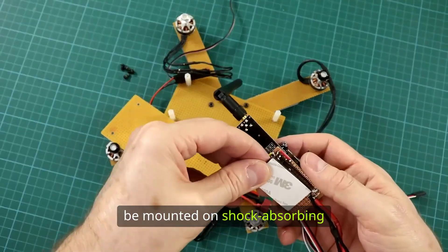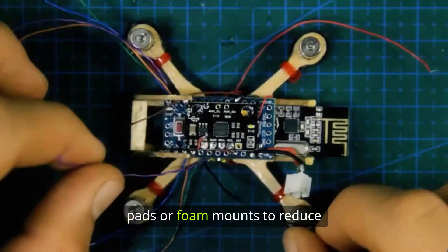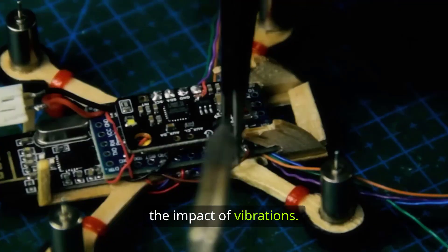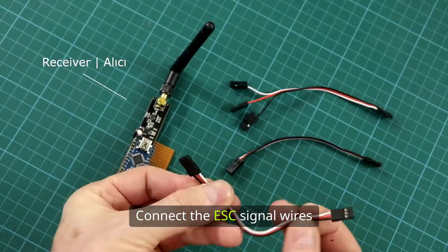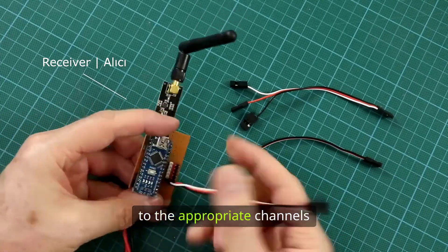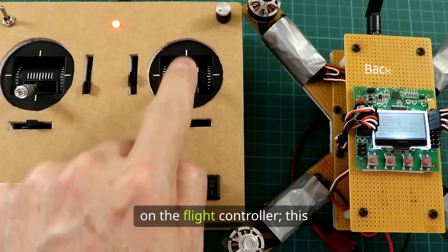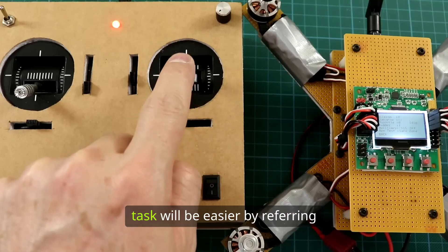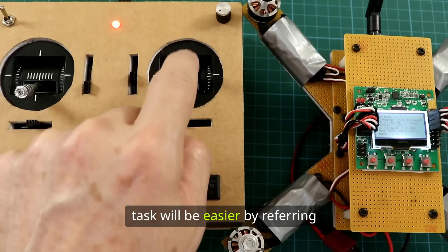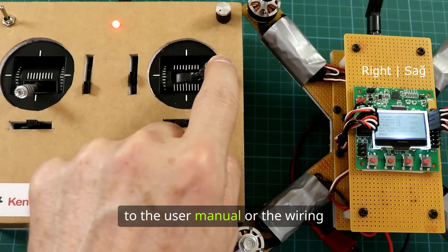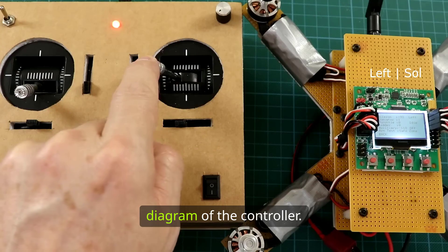Connect the ESC signal wires to the appropriate channels on the flight controller. This task will be easier by referring to the user manual or the wiring diagram of the controller.